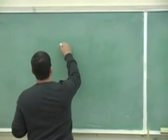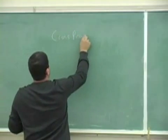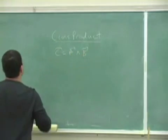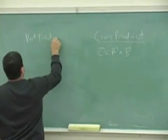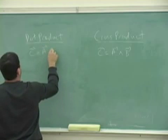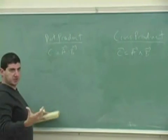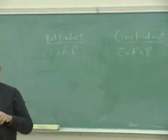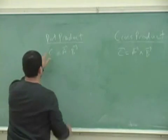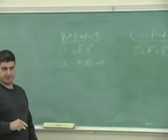Let's compare the cross product to the dot product. When you take the dot product between two vectors, it gives you a scalar — a certain number. This is known as the dot product, or the scalar product. The magnitude of that scalar is equal to the magnitude of A times the magnitude of B times the cosine of the angle between them.